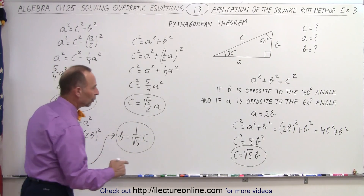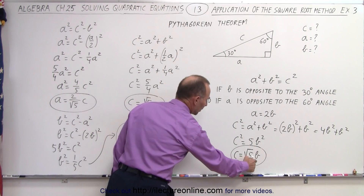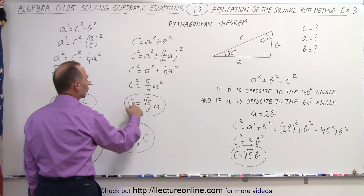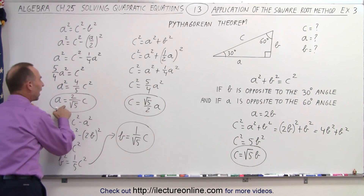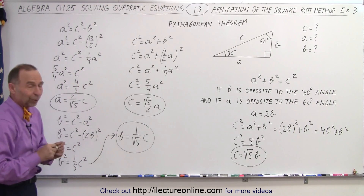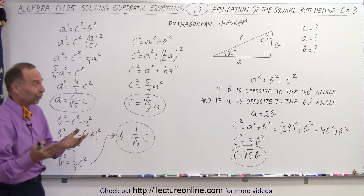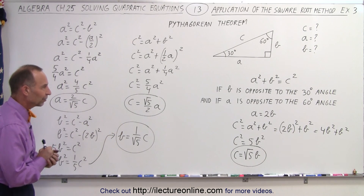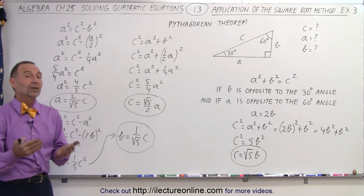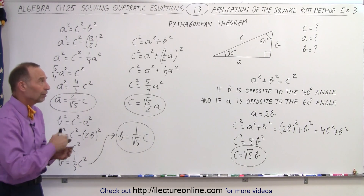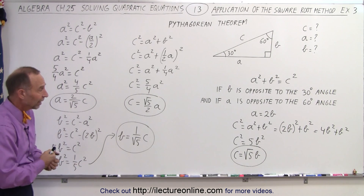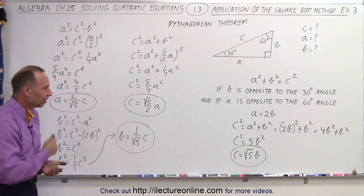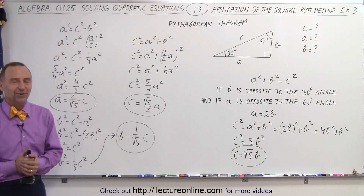Notice that we should be consistent: solving for B gives 1 over the square root of 5 times C, and solving for A gives 2 over the square root of 5 times C, which matches what we have. We can see we're consistent — whenever you work this out, you should be able to go from one to the other with no errors. That's how we use the Pythagorean theorem and the concept of angles when they're 45 and 45, or 30 and 60 degrees, using the square root method to solve quadratic equations and come up with these relationships.